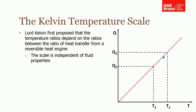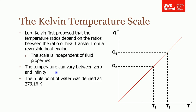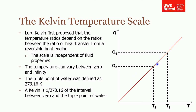The temperature scale starts at zero and goes to infinity and is a linear scale. To make it useful you need to fix a reference point — Lord Kelvin chose the triple point of water, defined as 273.16 Kelvin. Following from that, one Kelvin is equal to 1/273.16 of the interval from absolute zero to the triple point of water, which means one Kelvin equals one degree Celsius in interval size. This is the system we now use in thermodynamics.